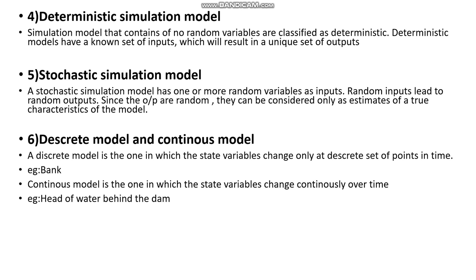The fifth type is stochastic simulation model. Stochastic simulation models are ones which have one or more random variables as input. Since the random variables are provided as inputs, the output will also be at random.